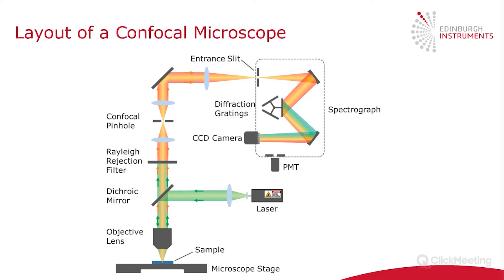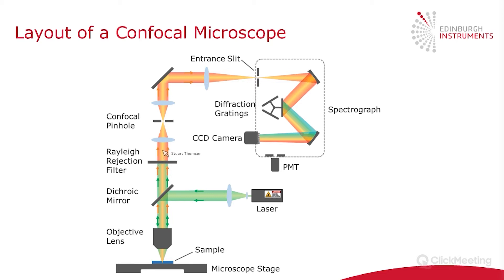This excitation either creates photoluminescence or Raman, depending on what you want to look at, which is then reflected from the sample and collected by the objective lens. So it's a reflection configuration, also known as an epi configuration. This photoluminescence or Raman then passes up through the dichroic mirror and is then filtered through a rejection filter, which removes all the excitation wavelength that might have reached this point.